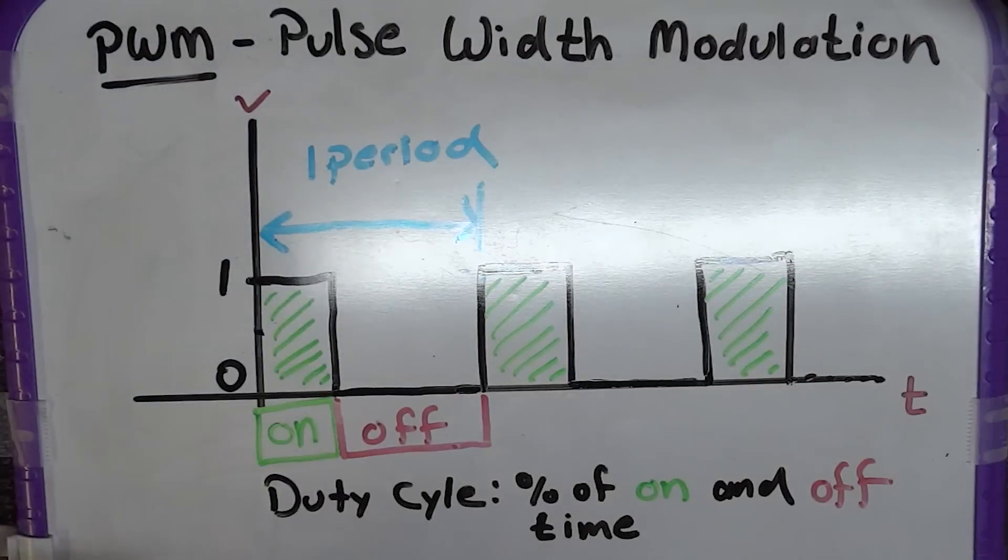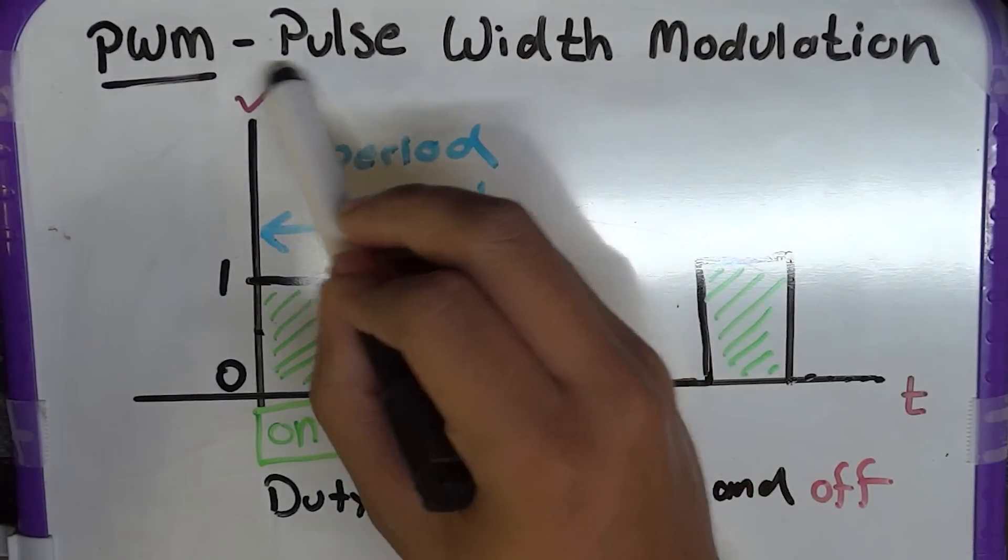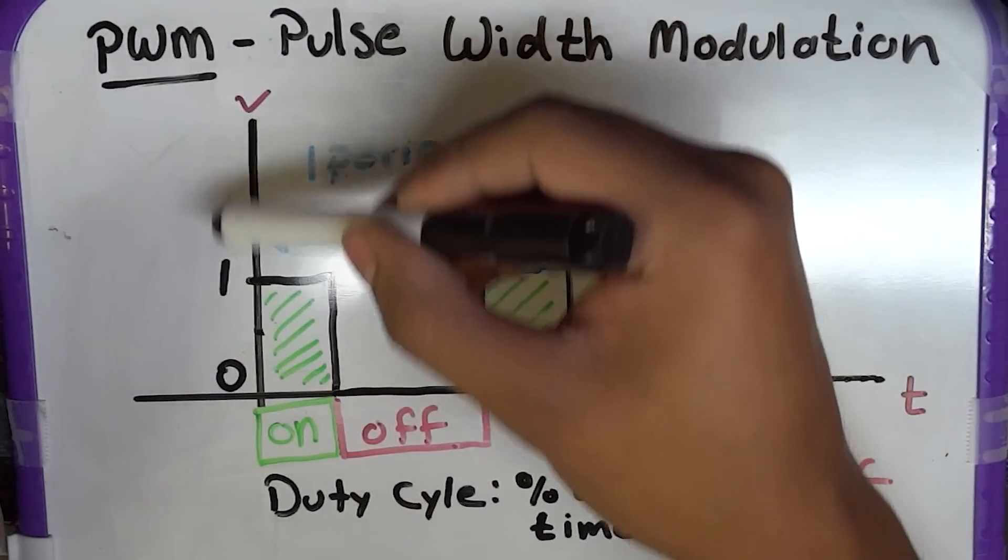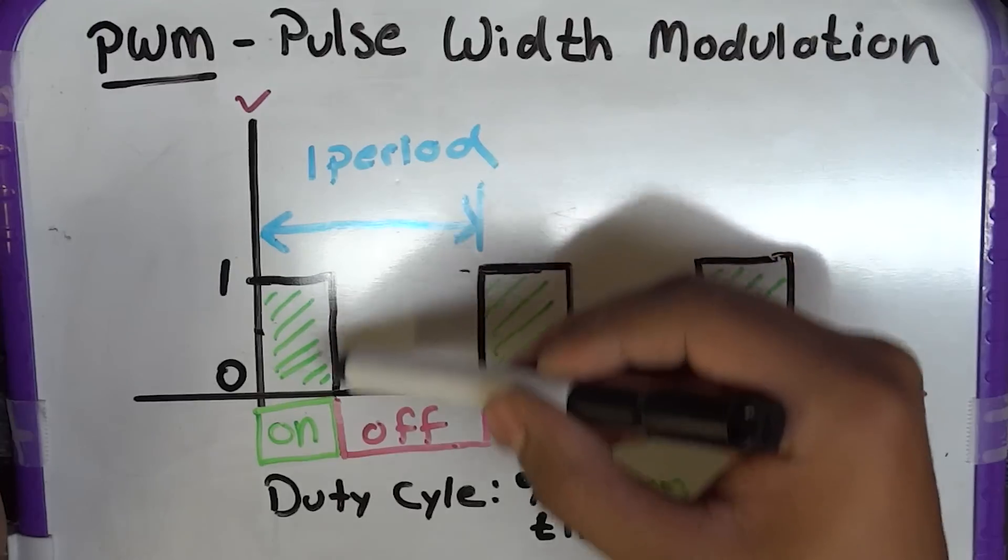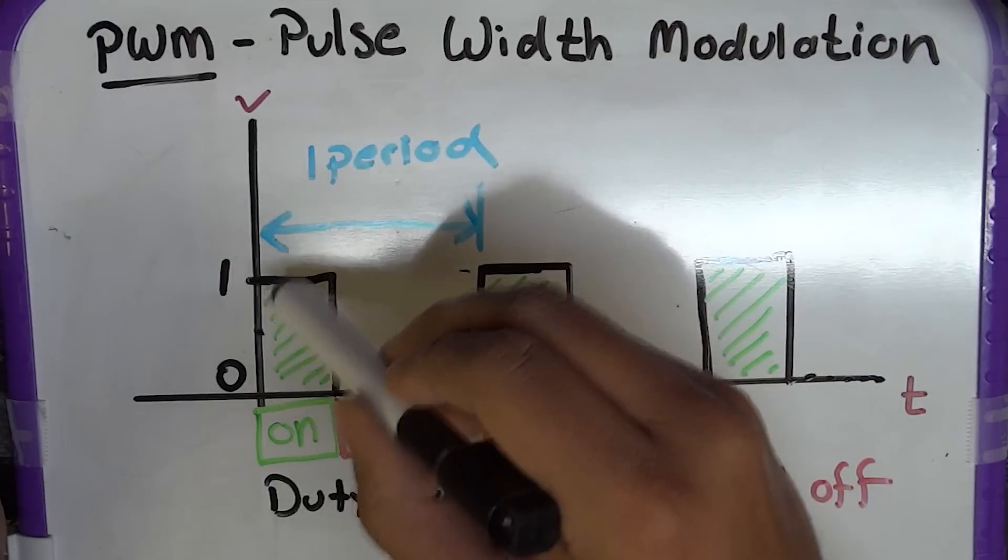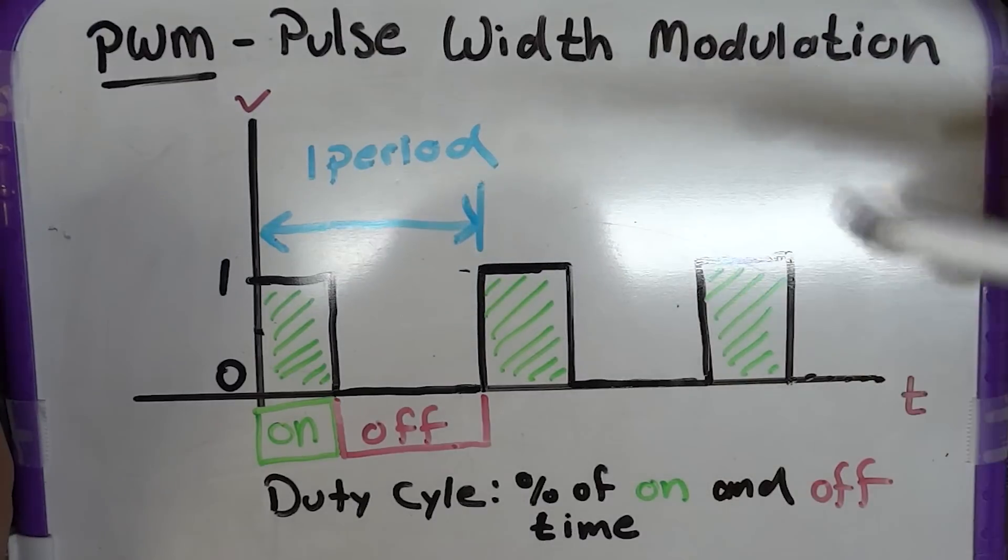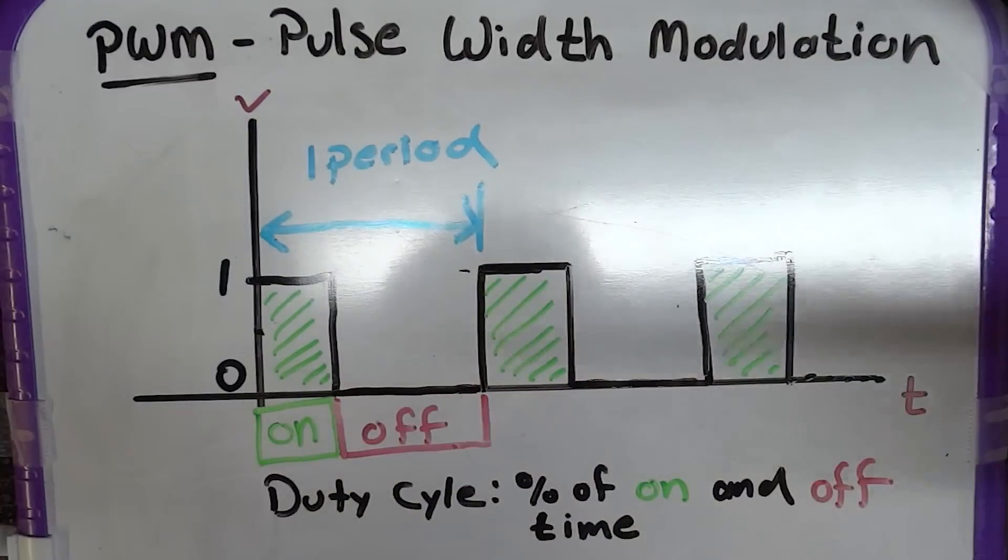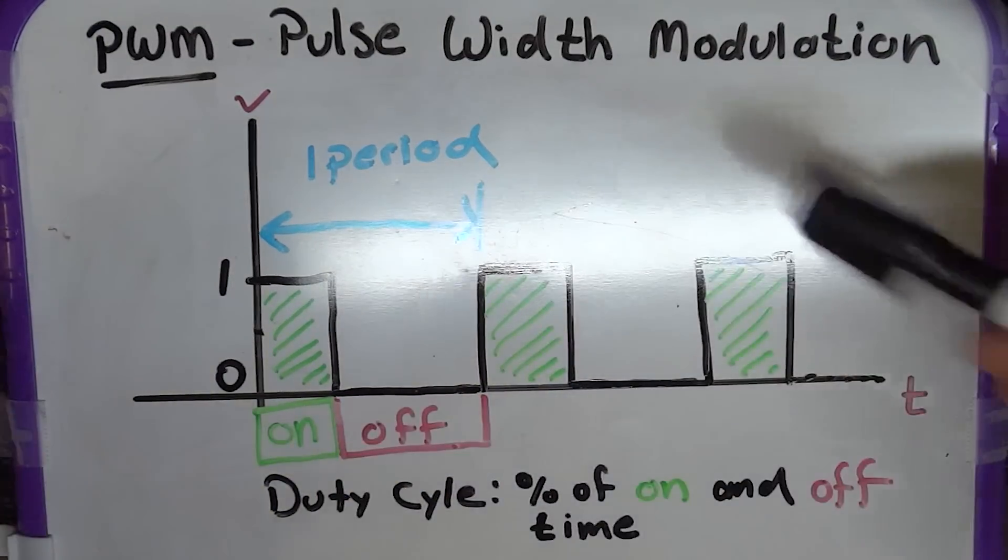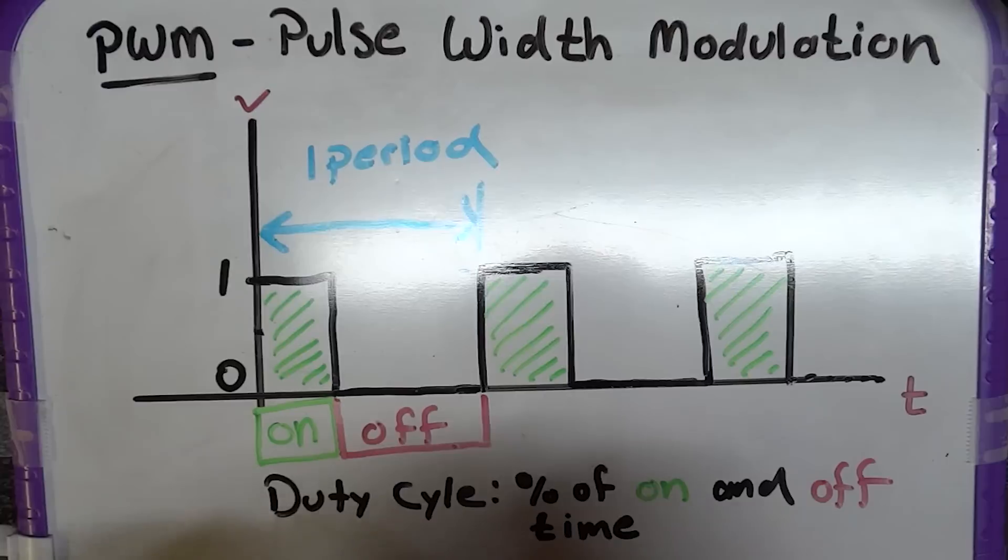So basically it pulses, which is where the pulse comes from. It goes up to logical 1, down to 0. It's high for a certain amount of time, then it comes down for a certain amount of time. And it does that repetitively, unless otherwise noted. But that's pretty much what it is. That's what Pulse Width Modulation is.